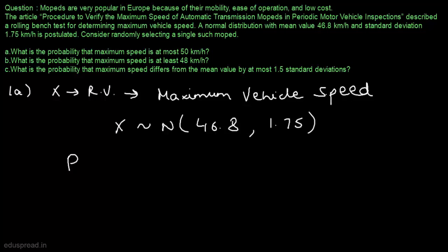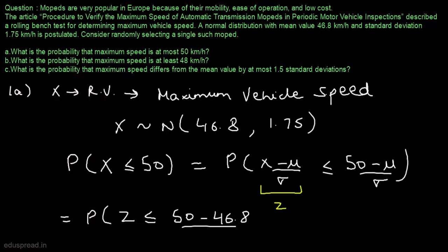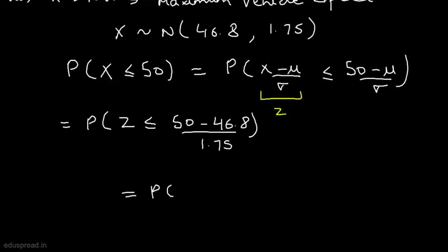In part A, we have to find the probability that maximum speed is at most 50 km per hour, meaning we have to find the probability that x is less than or equal to 50. This is equivalent to saying that (x minus mu) divided by sigma is less than or equal to (50 minus mu) divided by sigma, which is z. So this equals the probability that z is less than or equal to (50 minus 46.8) divided by 1.75, which gives z less than or equal to 1.83.